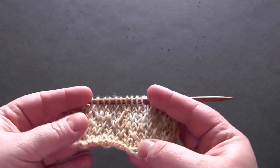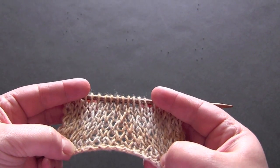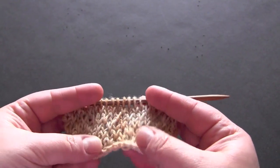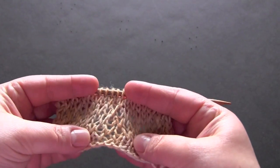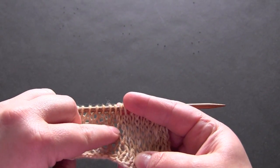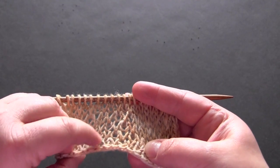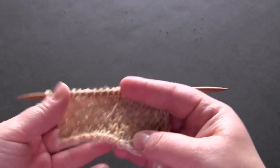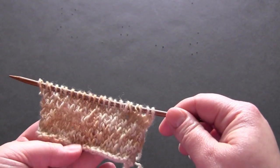This is basically stockinette stitch but with slipped stitches. I don't know if you can see on camera but some of these stitches are longer than the other ones. Those are the slipped stitches and the fabric doesn't lay flat.